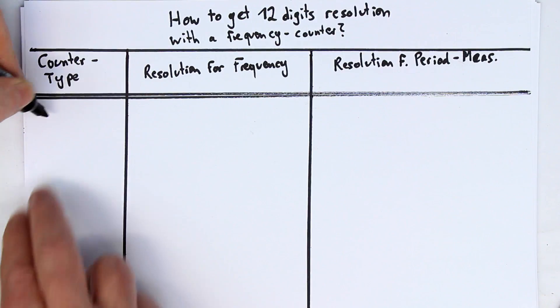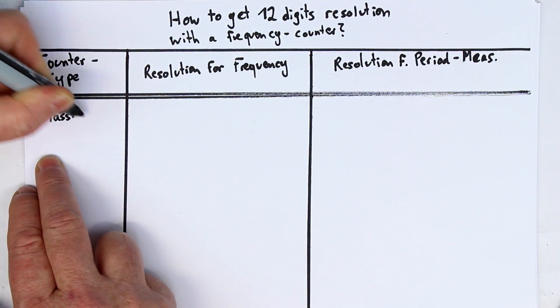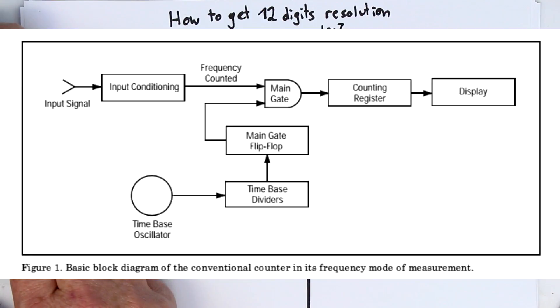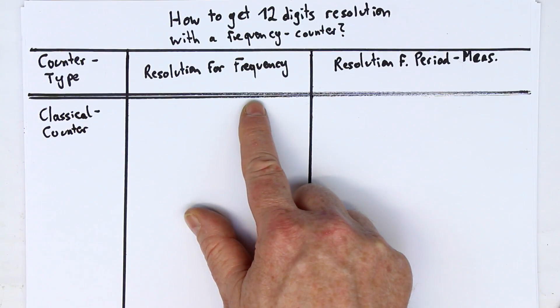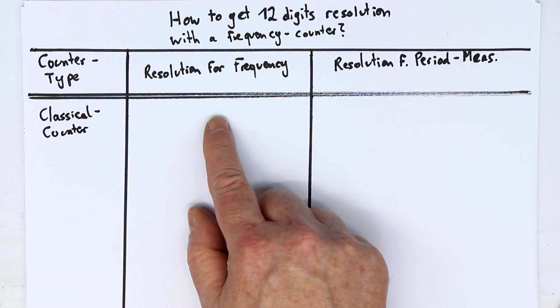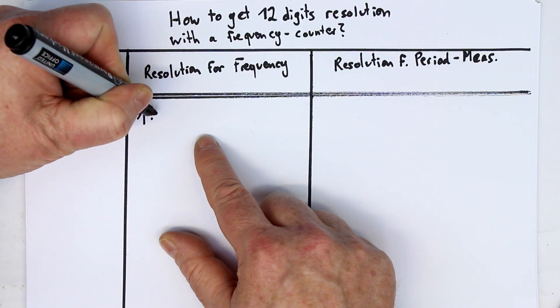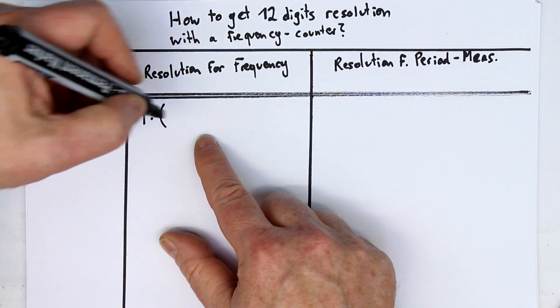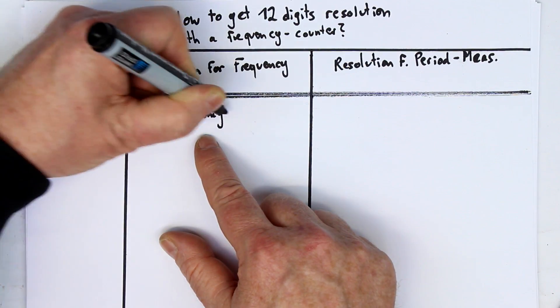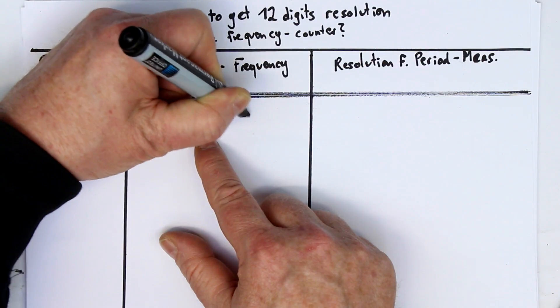Let's start with the classical counter. The classical counter simply counts pulses during the gate time. And so the resolution you get when you measure a frequency: you have your gate time and x number of pulses, and this x is simply your frequency. So the resolution is 1 divided by (frequency times gate time).